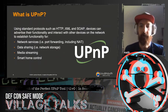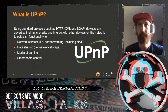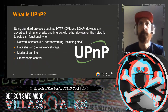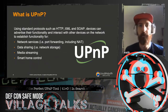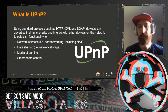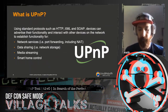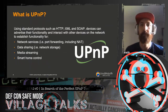UPnP uses standard services like HTTP, XML, and SOAP, and defines a way for services to describe their functionality and interact with other devices. A lot of common uses are for network services — small office and home office routers use this for configuring port forwarding. There's also data sharing for network storage, media streaming (for example, Chromecast uses UPnP to initiate streams), and smart home control, which we'll demo later today.